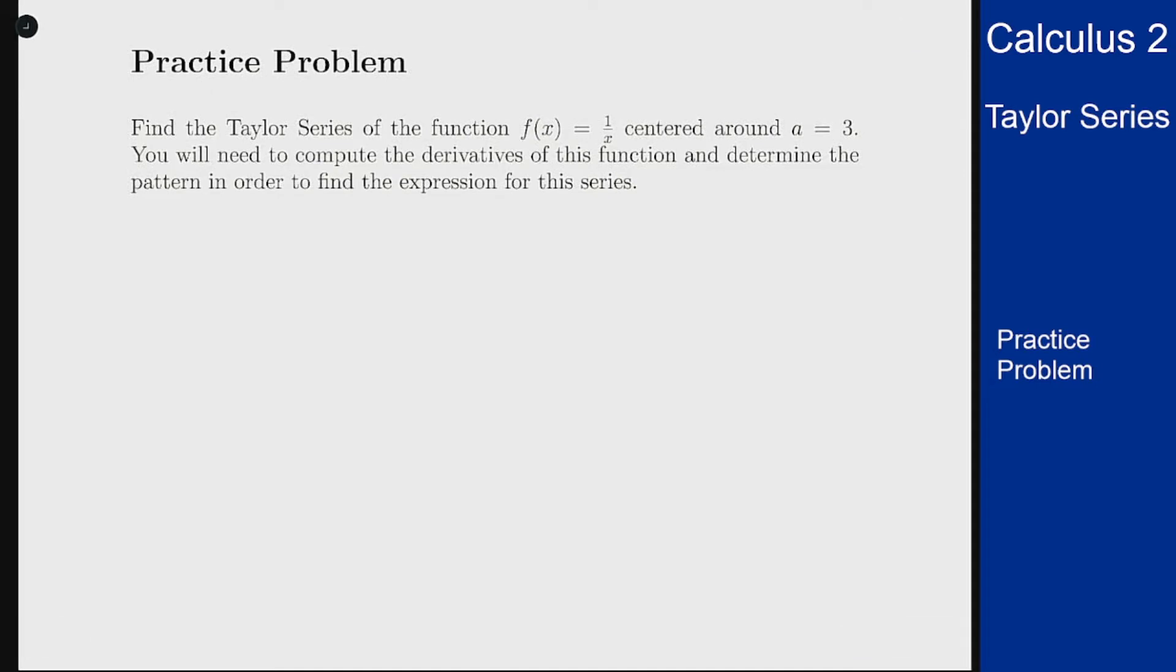So for a Taylor series centered around 3 this is given by the following expression. Our function equals the Taylor series n from 0 to infinity. We take the nth derivative of the function, we plug in our value here in this case 3, divide that by n factorial and that gets multiplied by x minus our value here of 3 to the nth power.